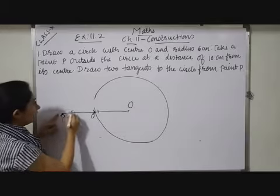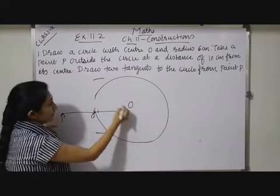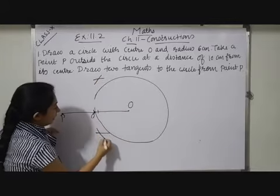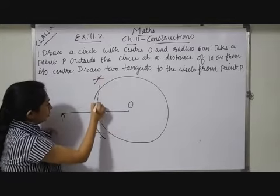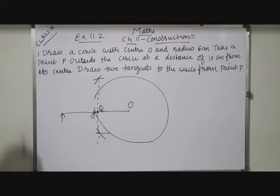So I have to take more than half distance. Mark an arc upward downward. Fix up at O, mark an arc upward downward. Now join it. Let it intersect at a point Q.